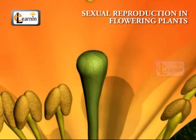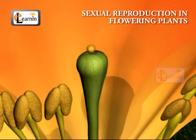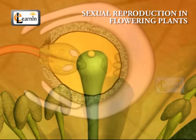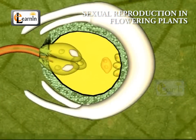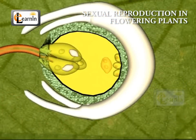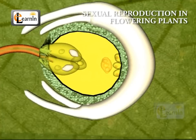The male germ cell produced by the pollen grain fuses with the female gamete present in the ovule. This fusion of germ cells, or fertilization, gives us the zygote, which is capable of growing into a new plant.